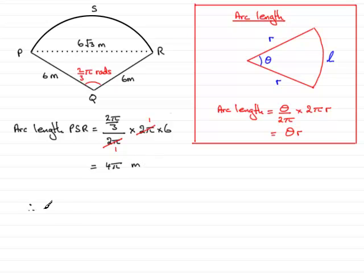So therefore, the perimeter equals, and we've got 4π plus now these two sides, which is going to be another 6 plus 6, in other words 12.